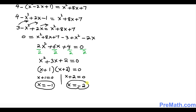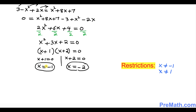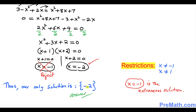However, at the beginning we established the restriction that x cannot be negative 1. Since x equals negative 1 violates this restriction, it is not acceptable — this is our extraneous solution and we must reject it. Therefore our only valid solution is x equals negative 2, while x equals negative 1 is the extraneous solution. Thanks for watching and please subscribe to my channel for more videos.